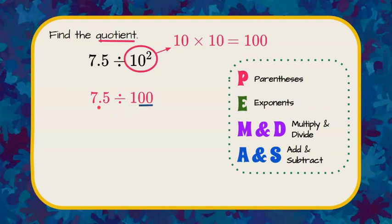So that means I'm going to take those two 0s, and I'm going to count by dividing. I'm going to take them away from the 7.5 by moving the decimal point two spaces to the left. Because when we divide, we're getting smaller.